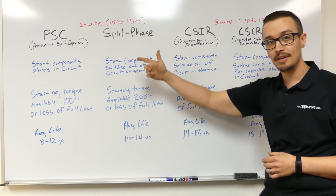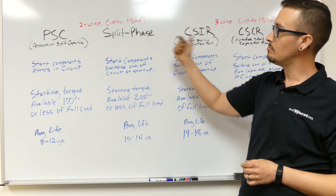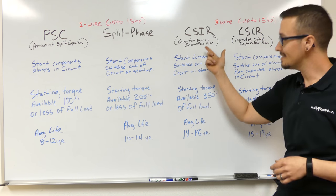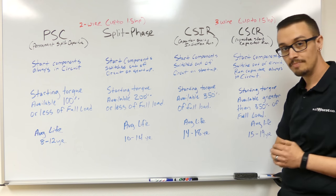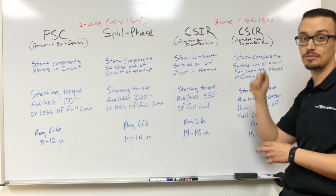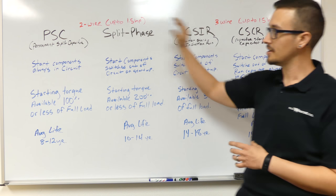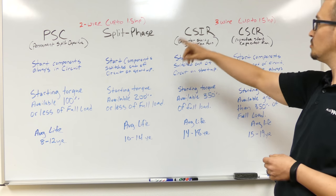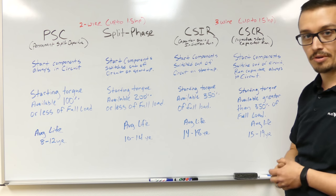So anyways, we've got permanent split capacitor, PSC, split phase, CSIR or capacitor start induction run, and we've got CSCR, capacitor start capacitor run. And so on the side over here, left side, we've got the two wire, and on the right side, we've got the three wire.